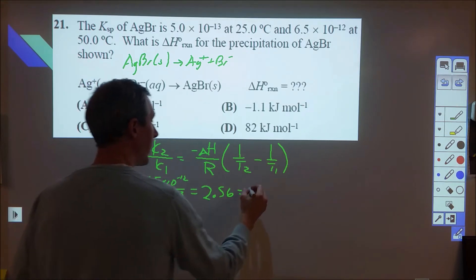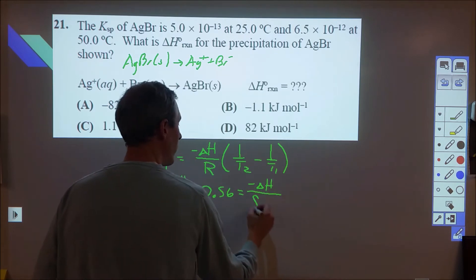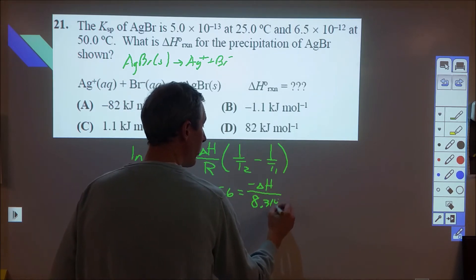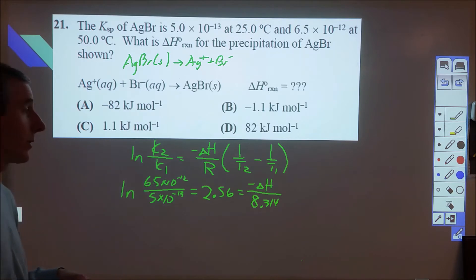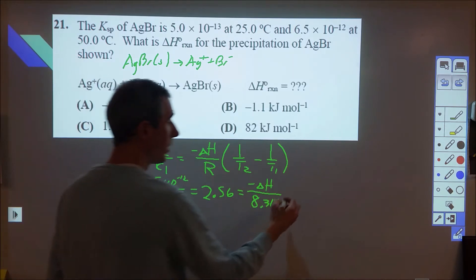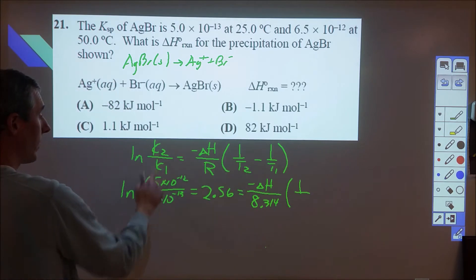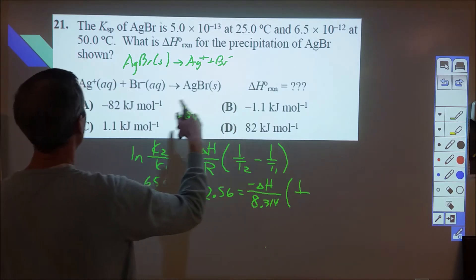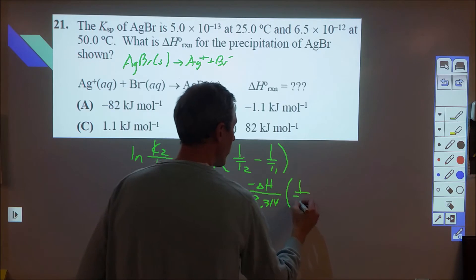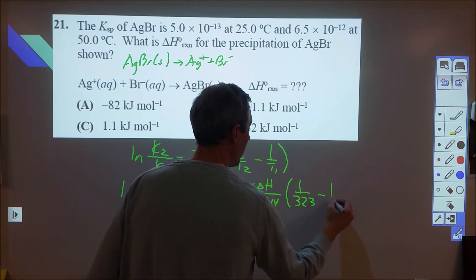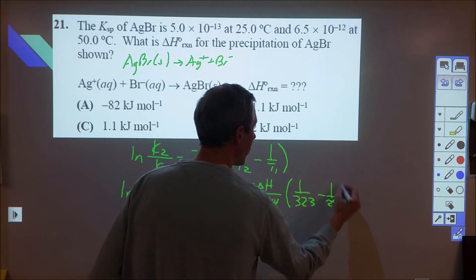I did all that, and we've got a negative delta H which we're searching for. We use 8.314, which is in joules per mole Kelvin. That means we're going to get an answer here in joules. And we're going to plug in our T2, so T2 is going to be the one that matches this value, which is the higher temperature, which is 50 degrees, so 323 Kelvin, and 1 minus 298 for 25 Kelvin.